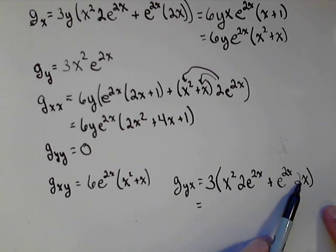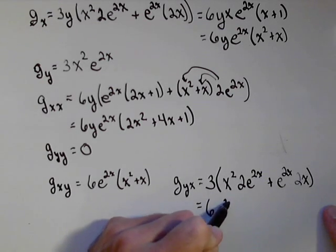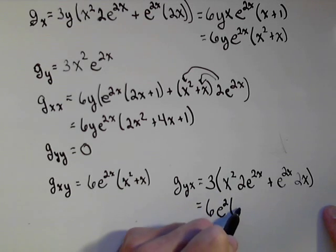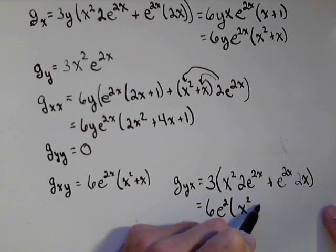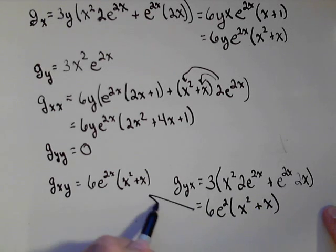Factoring out what we can, I can pull out a 2. That's going to make that a 6. I can pull out an e^(2x) and look at what I got left. I have x² from this one plus an x from this part. They check out.